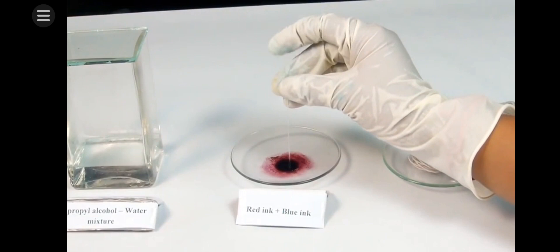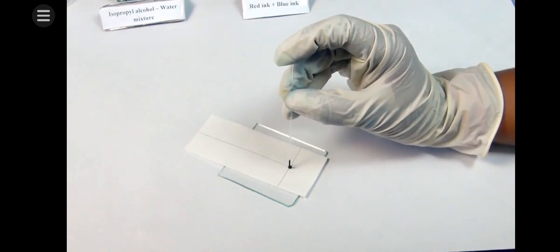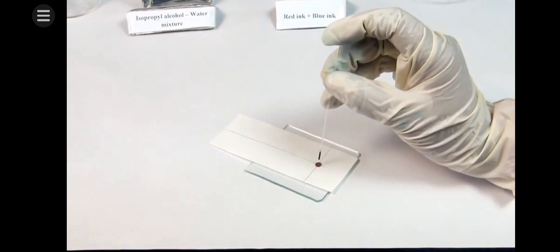Take the mixture of red and blue inks using a capillary tube. Put a drop of mixture of red and blue inks at the point P. Allow it to dry in open air. Put another drop on the same spot and dry again so that the spot is rich with the mixture.